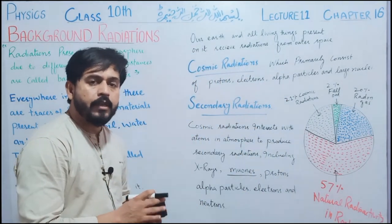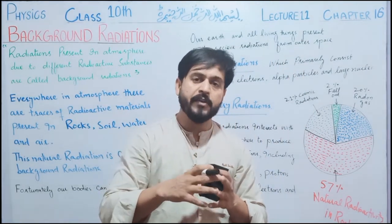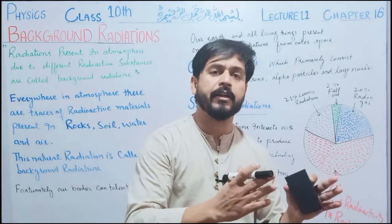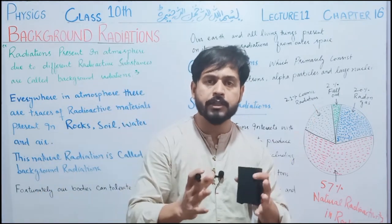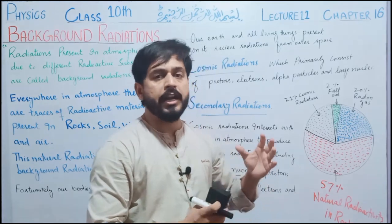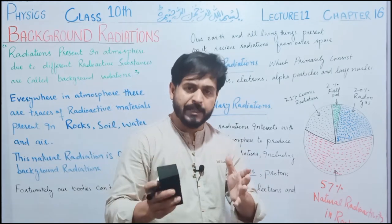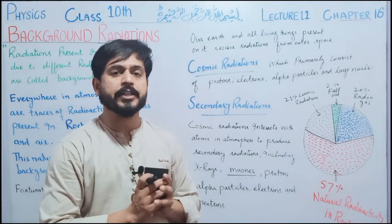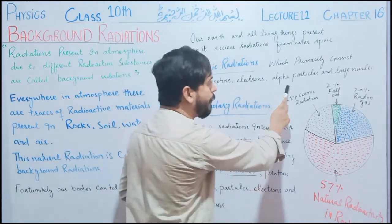اگر ہم outer space کی بات کریں، سورج کے اوپر جو fission یا fusion reactions ہو رہے ہیں، ان کے نتیجے میں بہت زیادہ مقدار میں radiation زمین کی طرف travel کرتی ہیں۔ یہ outer space سے radiation آ رہی ہیں، اور جیسے ہی یہ ہمارے atmosphere میں داخل ہوتی ہیں تو یہ further کچھ categories کی radiation produce کر دیتی ہیں۔ جو radiation outer space سے آ رہی ہیں انہیں cosmic radiation کہا جاتا ہے۔ They are of further different types.